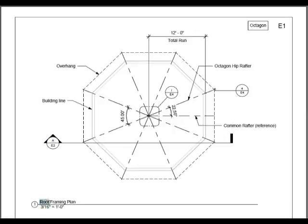Let's start by looking at the roof framing plan. This is the building line, outlined faintly in green, and the overhang is dashed. The total run in our example is 12 feet, and that goes from the center point to the building line. This would be the common rafter reference plane. At a specified angle from the common rafter, we have the octagon hip rafter. 45 degrees is the angle between the octagon hip rafters. Half of that is 22.5.